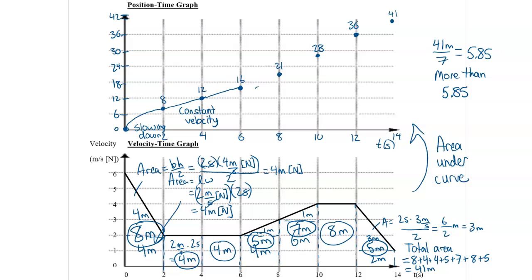Then from six to ten, we can see that it is speeding up. The velocity on the velocity-time graph is getting bigger and bigger. And so if it's speeding up, the position-time graph is a curve that curves upwards like so.